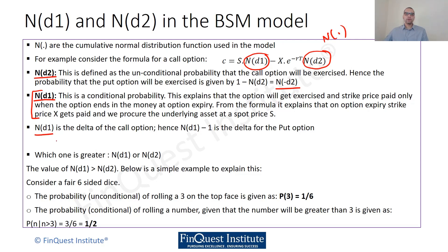That's the interpretation of N(d1) and N(d2). N(d1) is the delta for a call option. N(d1) - 1 is the delta for a put option.